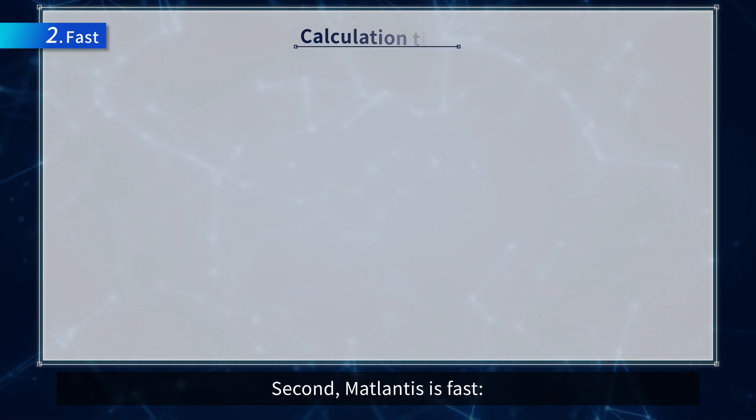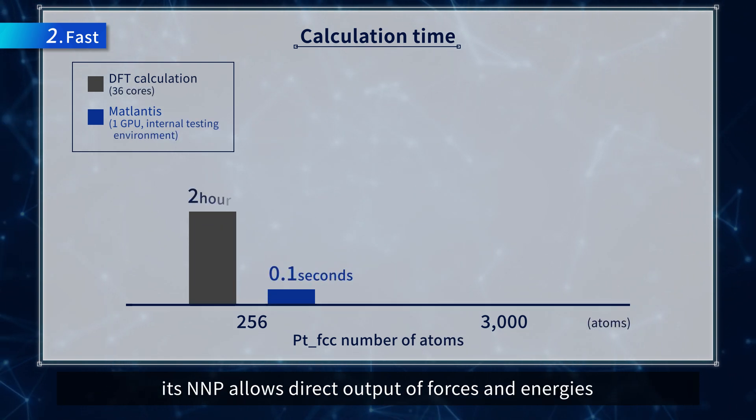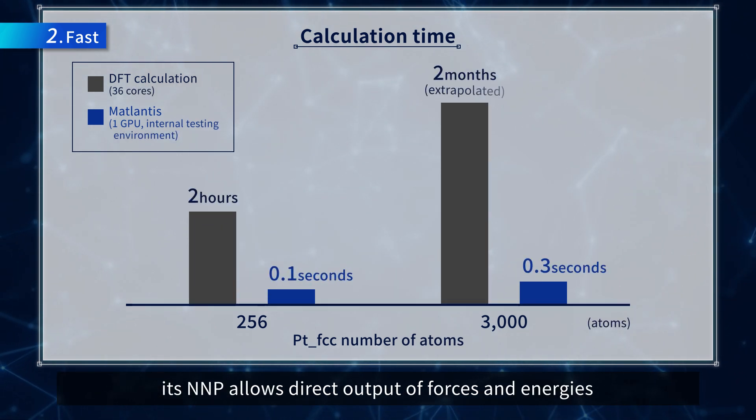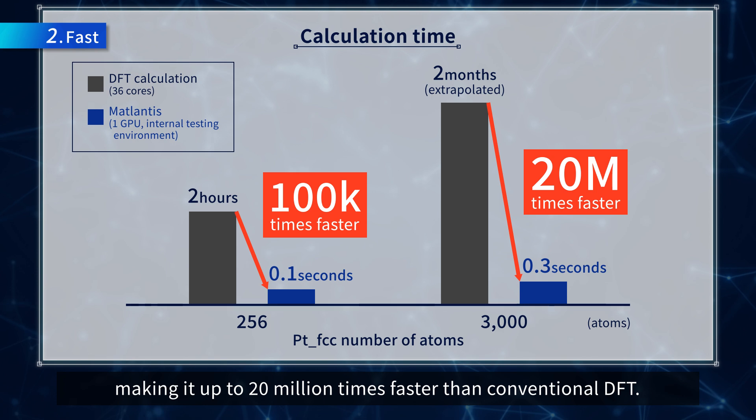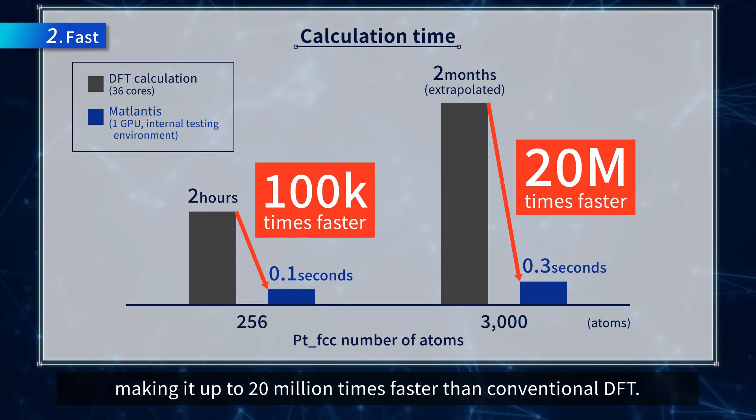Second, Matlantis is fast. Its neural network potential allows direct output of forces and energies without computationally expensive electronic calculations, making it up to 20 million times faster than conventional DFT.